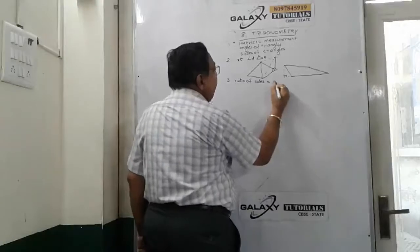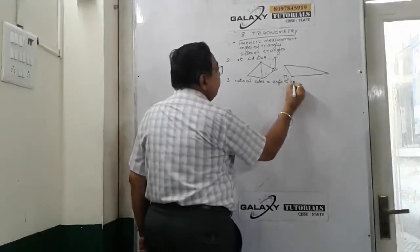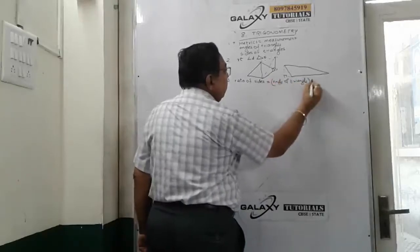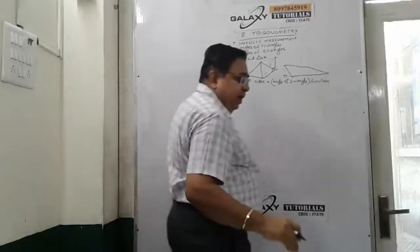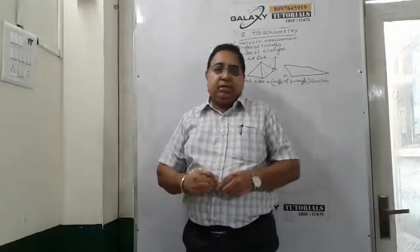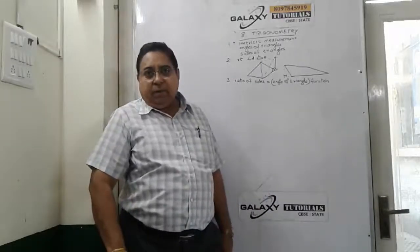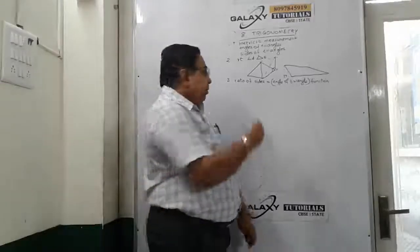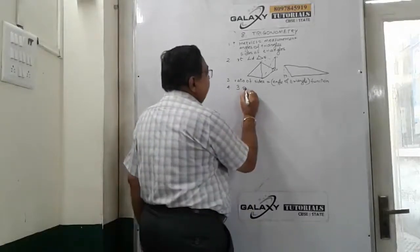Trigonometry can be used for x equal to an angle of a triangle — not directly the angle itself, but a function of that angle. What is a function? x-squared is a function of x; 1 upon x is a function of x. You get an answer in some form of the variable, which is the angle. Fourth point: there are only three sides to a triangle.